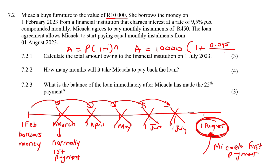So we're just going to use the grade 11 formula and compound that 10,000 Rand at 9.5%, compounded monthly. And how many payments did she miss? Five. So we get 10,402 Rand and 15 cents.